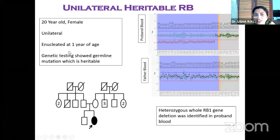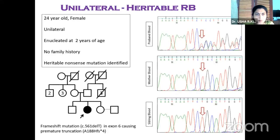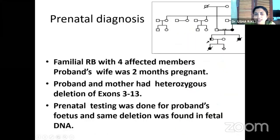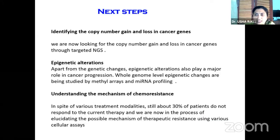A 20-year-old female with unilateral RB enucleated at one year of age — genetic testing showed germline mutation, heterozygous whole RB1 gene deletion was identified in the proband, with a chance of offspring getting affected. A 24-year-old female with unilateral RB enucleated at two years of age with no family history — heritable nonsense mutation was identified, and again there is a chance of offspring being affected. In another scenario with four affected family members, the proband's wife was pregnant and had heterozygous deletion of exons 3 to 13. Prenatal testing after amniocentesis showed the same deletion in fetal DNA, leaving termination to the discretion of the patients.